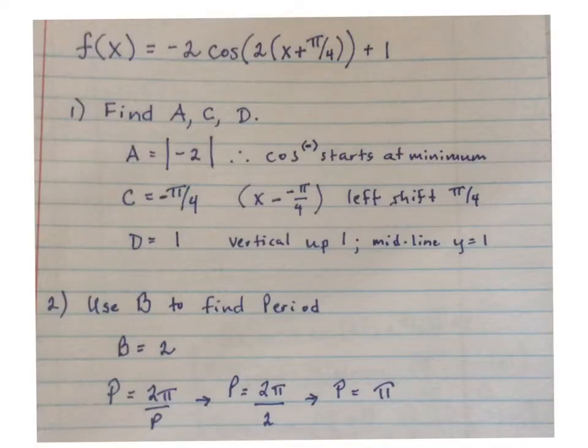Just like we did in the first example on the previous video, here I want to find a, c, and d, or identify those first. It looks like a is negative 2, but to help us use that value for the amplitude, we think about it in terms of the absolute value. However, because it's negative, we know that it's going to start at a minimum. c is negative π over 4, d is 1.